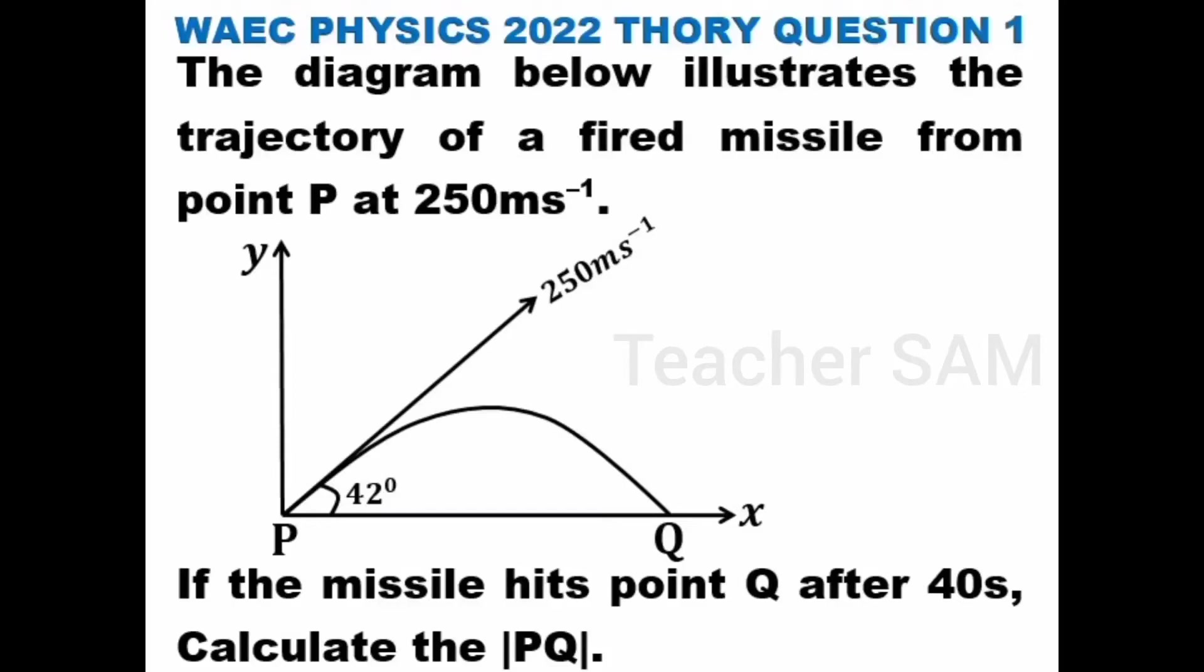Solution 1. The diagram below illustrates the trajectory of a fired missile from point P at 250 meters per second. If the missile hits point Q after 40 seconds, calculate the line PQ.